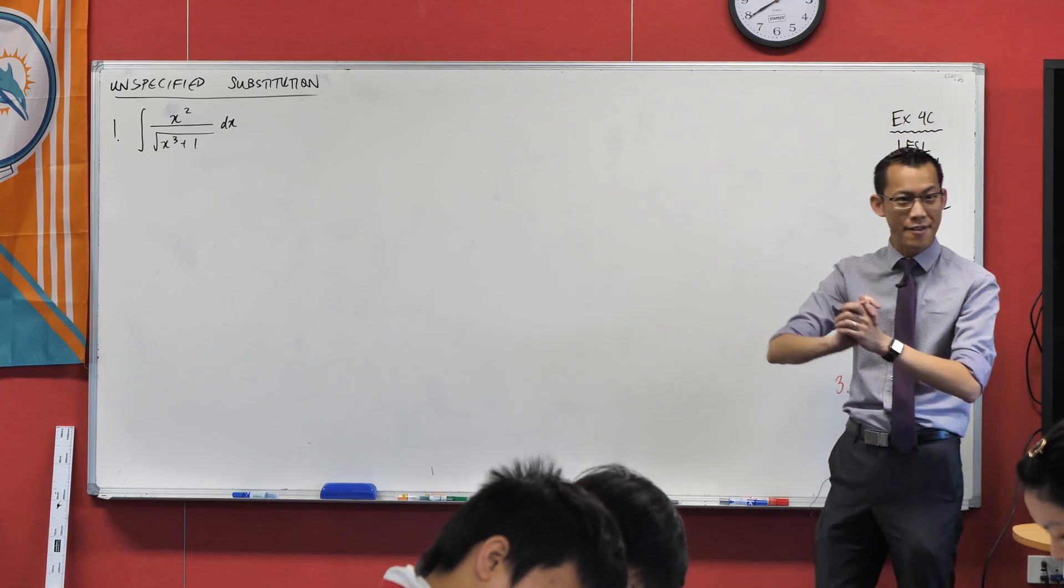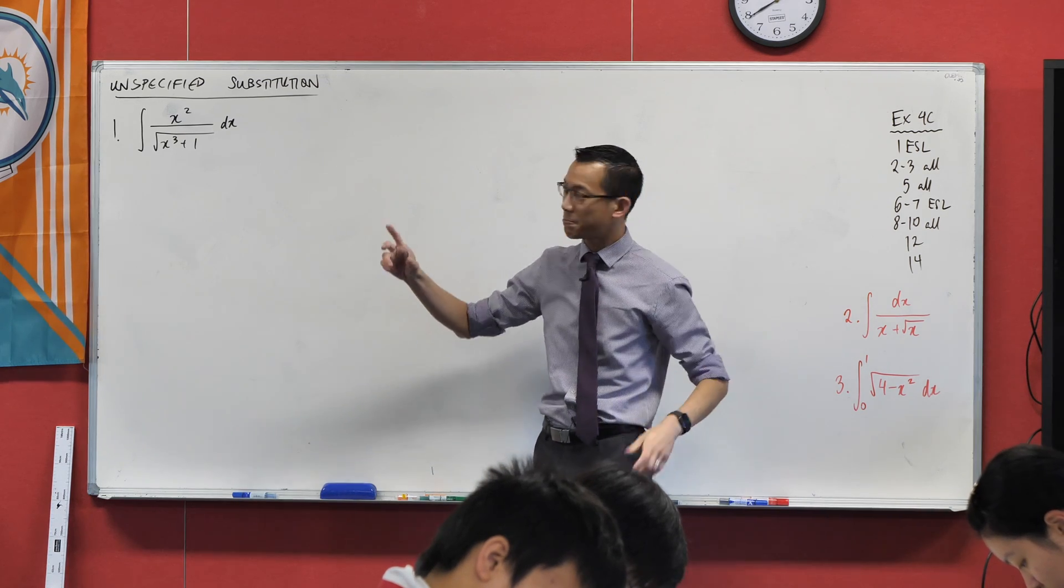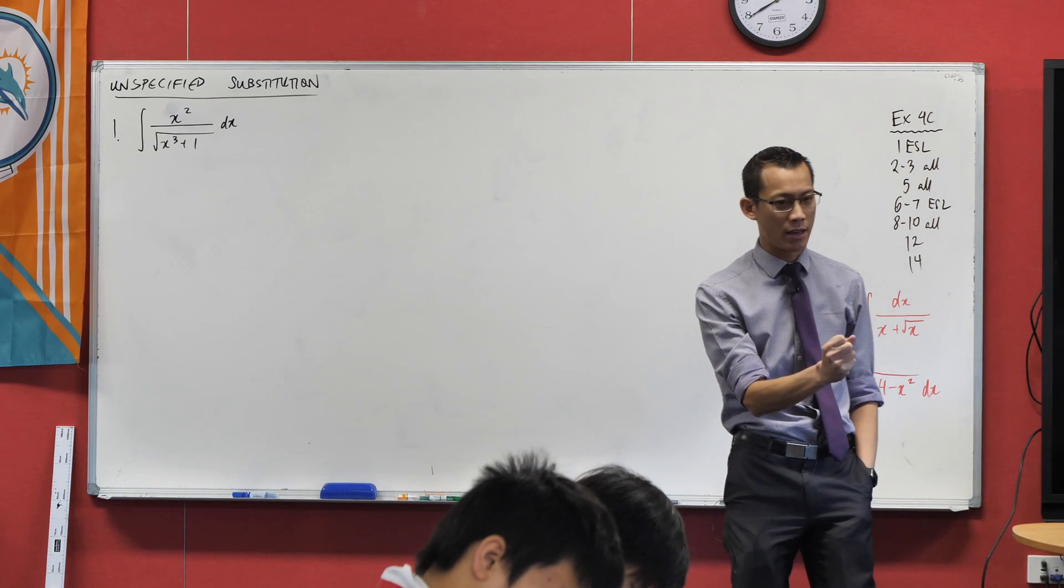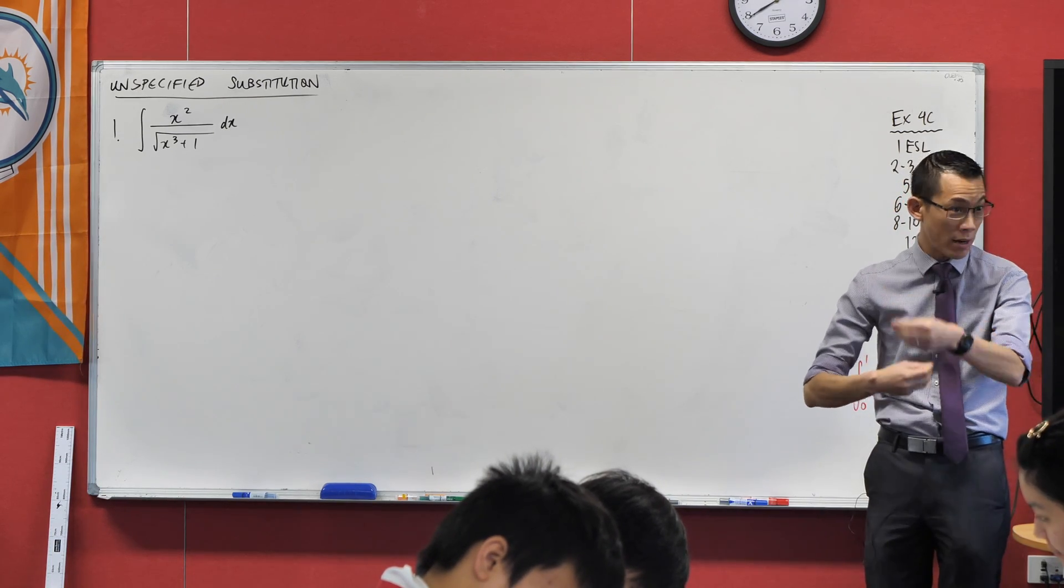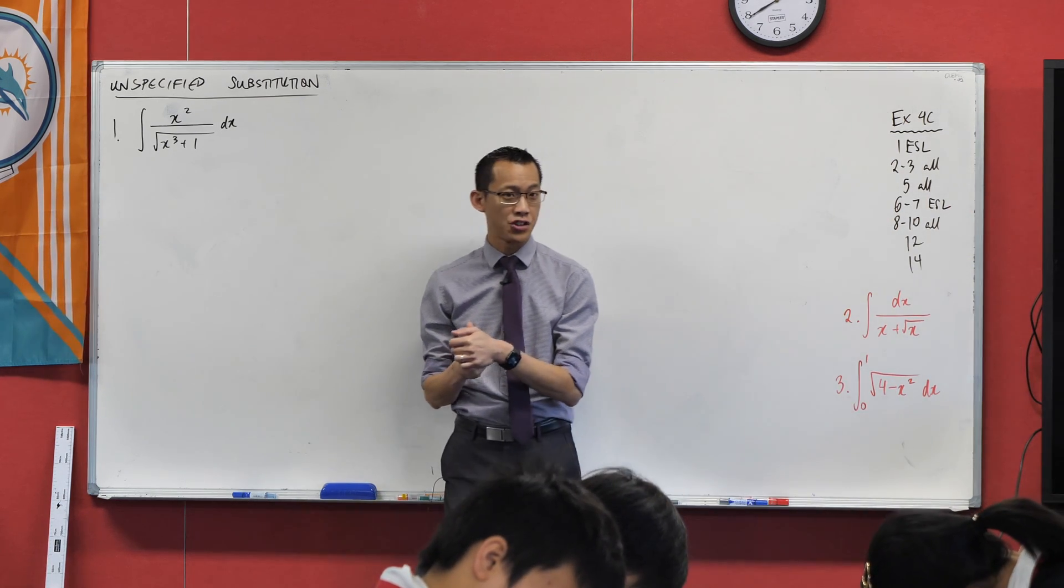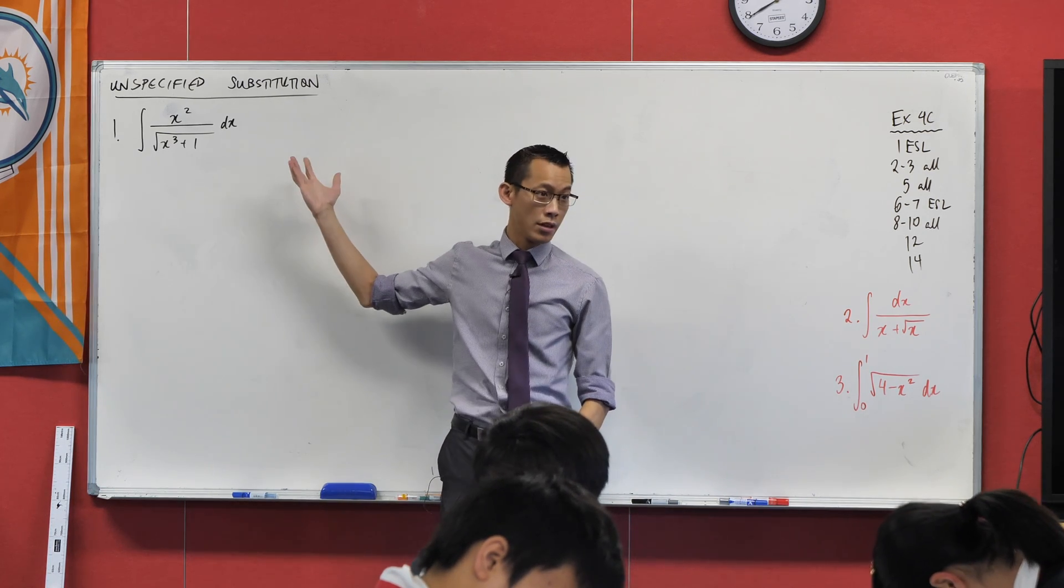Just to recall when we were having a look at that increasingly large concentric circles diagram, one of the things that we learned in Extension 1 was how to integrate something by substitution, which is just a fancy way of reversing the chain rule. We always provide a substitution in Extension 1 integration.